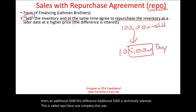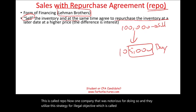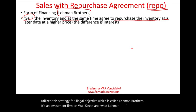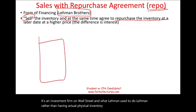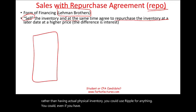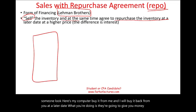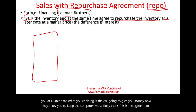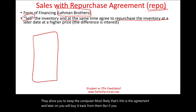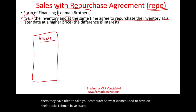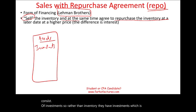One company notorious for doing this was Lehman Brothers, an investment firm on Wall Street. Rather than physical inventory, you could use repo for any asset. For example, you could sell your computer to someone and agree to buy it back at a later date. They give you money now, allow you to keep the computer, and later you buy it back — but if you don't, they have the right to take it. Lehman Brothers had assets consisting of investments, which were technically their inventory, since they bought and sold investments.